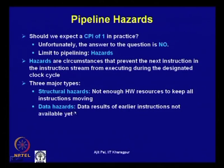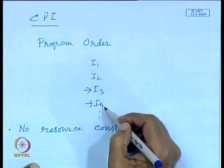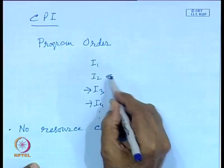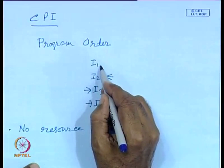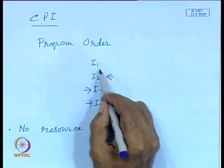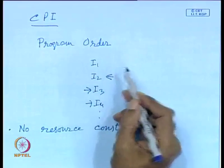The second type is data hazards, which arise because data from earlier instructions is not yet available. For example, instruction 2 may require data produced by instruction 1, and when instruction 2 tries to read that data, instruction 1 has not yet written it into the register. Since all ALU operations in a RISC processor involve registers, if the result is not yet written into the register and a subsequent instruction needs it, a data hazard occurs.